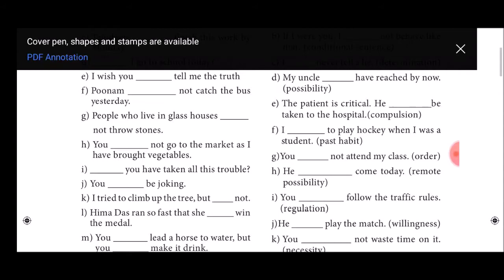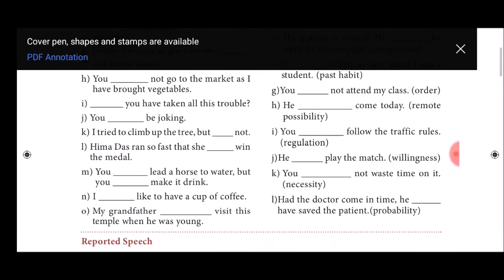K sentence: I tried to climb up the tree but could not. That is past tense so we can use the word could. L sentence: Hima Das ran so fast that she could win the medal.